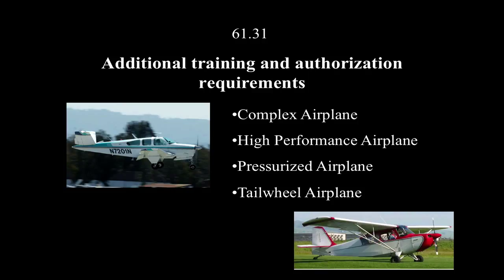The first endorsement is for a complex airplane, which has a very specific definition — it requires all three of these: retractable landing gear, a controllable pitch propeller where the pilot can adjust the blade angle from the cockpit, and flaps. Not all airplanes have flaps. If any one of those three is missing, it is technically not considered a complex aircraft.